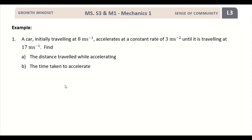Now let's look at Example 1. The examples go from easier to harder. Example 1: a car initially traveling at 8 m/s accelerates at a constant rate of 3 m/s² until it is traveling at 17 m/s. Find (a) the distance traveled and (b) the time taken to accelerate.